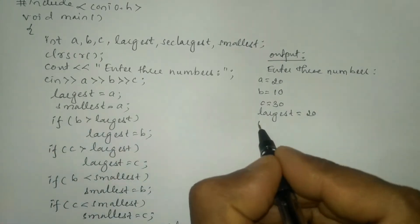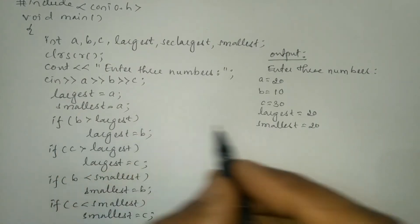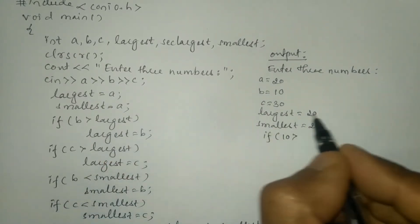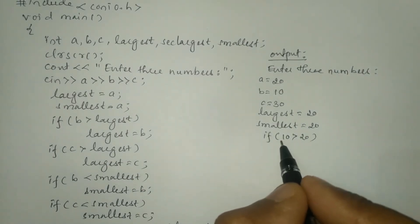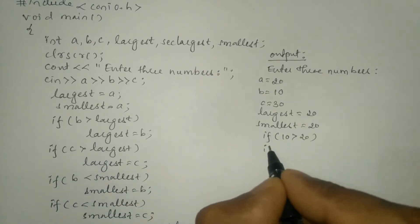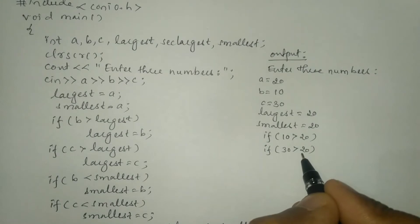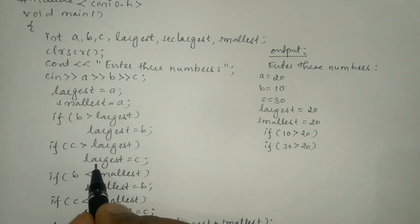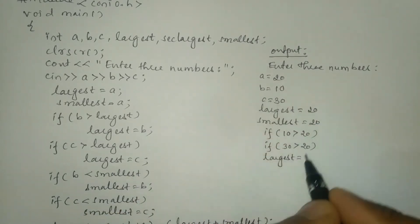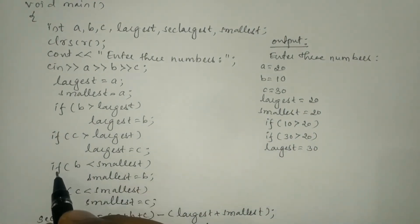Largest is initialized to a which is 20, and smallest is also initialized to a which is 20. We check: if b (10) is greater than largest (20) — that is false, so no assignment. Next, if c (30) is greater than largest (20) — that is true, so largest is updated to c which is 30.